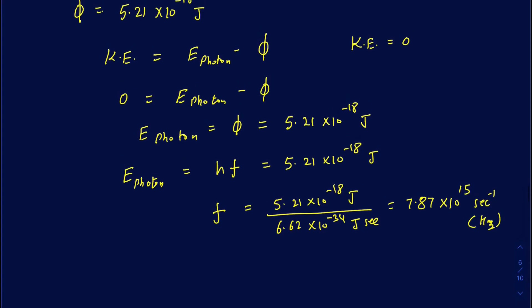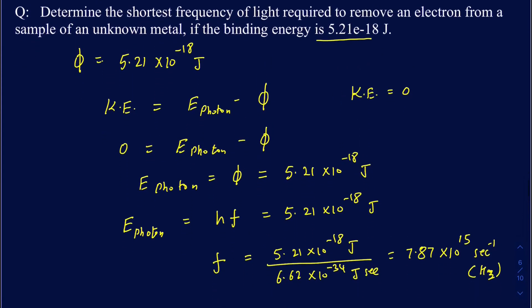The problem could also be modified by giving a higher photon energy and asking for the kinetic energy of the ejected electron, then from there asking for its velocity using KE = ½mv². Hopefully this video is helpful — if you have any questions, please leave them in the comments below.